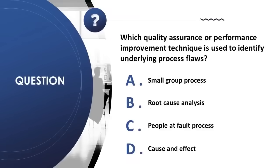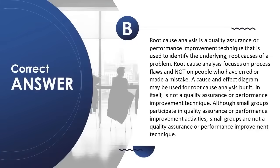Question 27: Which quality assurance technique is used to identify underlying process flaws? A) small group process, B) root cause analysis, C) people at fault process, D) cause and effect. Correct answer is B. Root cause analysis identifies the underlying root causes of a problem, focusing on process flaws rather than people who made a mistake. A cause-and-effect diagram may be used for root cause analysis but is not itself a QA technique. Small groups participate in QA activities but are not a QA technique.